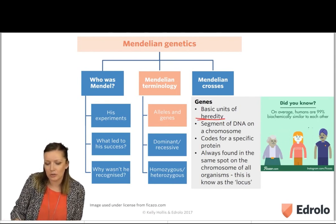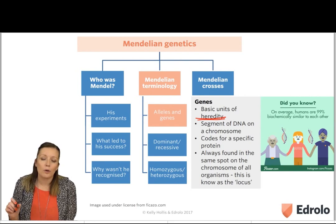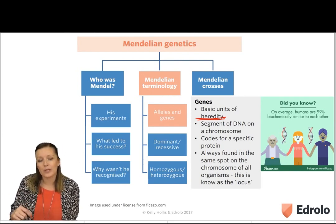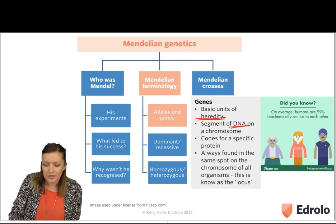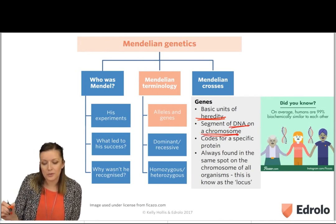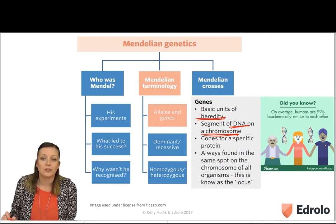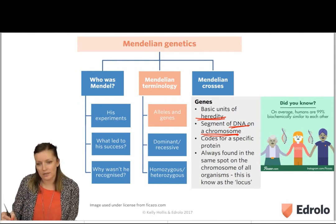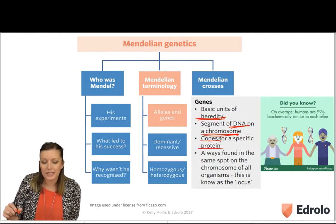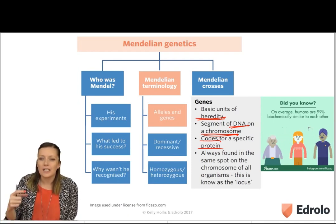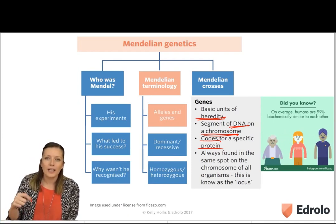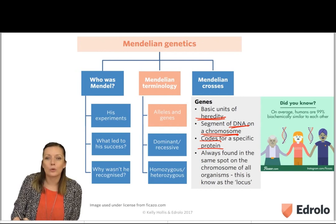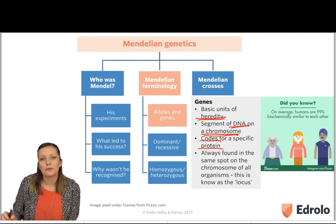Genes are the basic unit of heredity. We get one of our genes from each of our parents — one from our mother and one from our father. They are a segment of DNA that is found on a chromosome, and our chromosomes are found in the nucleus of our cell. The DNA makes up our genes, and they code for a specific protein. Genes are sections of DNA with a particular code, and we'll look at how genes code for particular proteins when we cover protein synthesis.